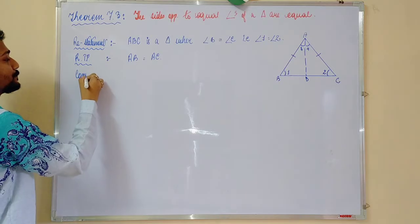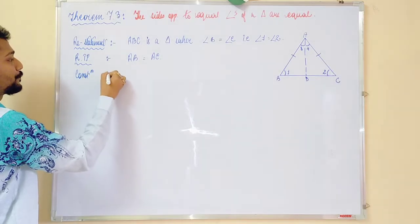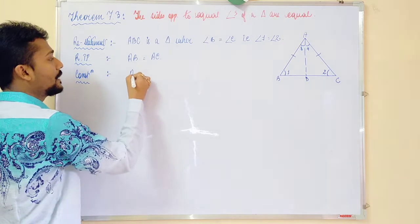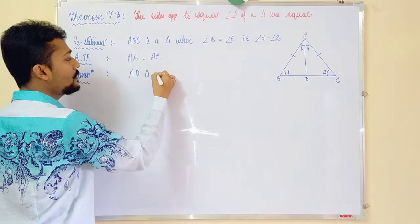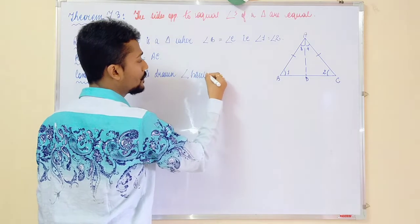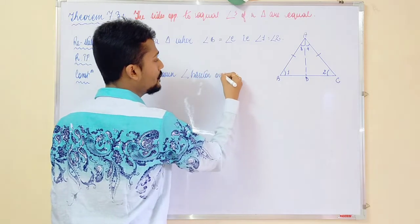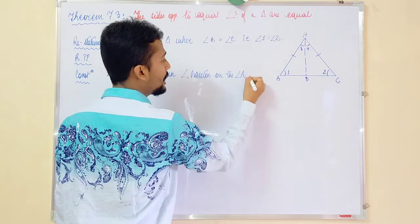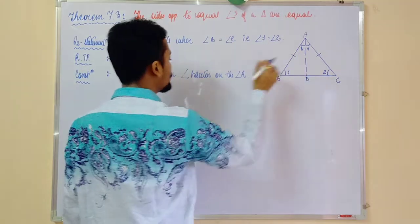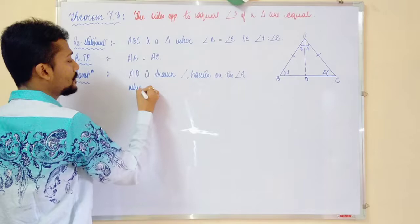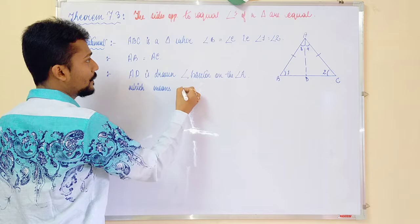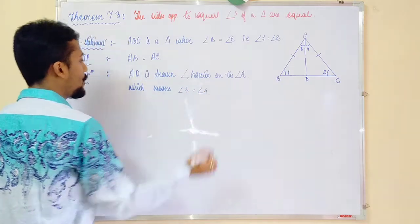Now, construction. What we have constructed? AD is drawn angle bisector on the angle A. Which means 3 is equal to 4. You can write here, which means angle 3 is equal to angle 4.